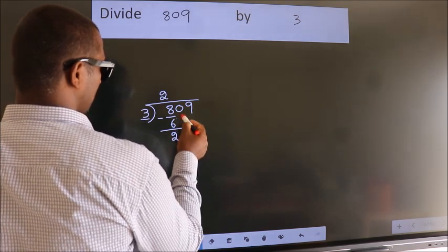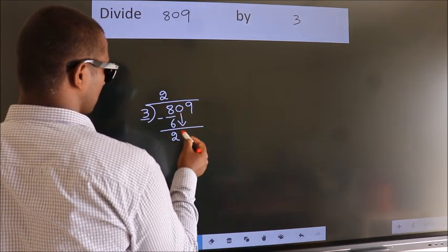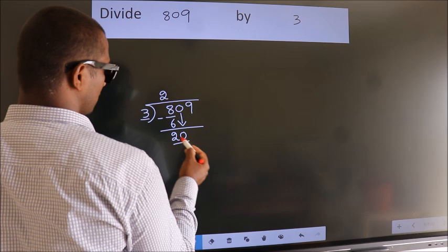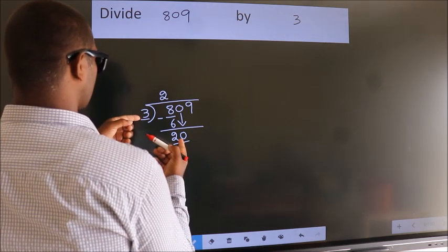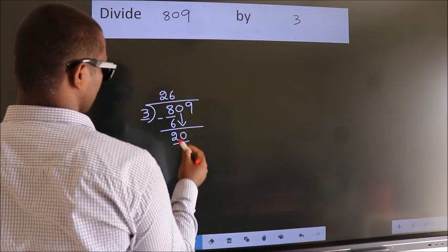After this, bring down the beside number. So, 0 down. So, 20. A number close to 20 in the 3 table is 3 times 6, which is 18.